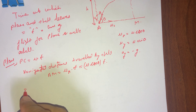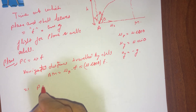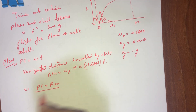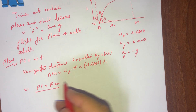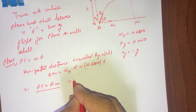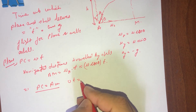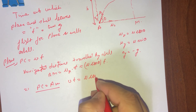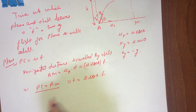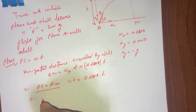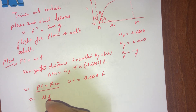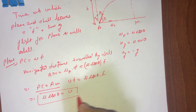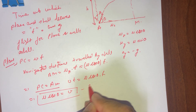Since distance PC equals distance AM, we substitute the values: vt = u·cosθ·t, or we can write that u·cosθ = v. Let us call this equation number one.